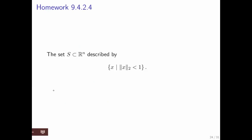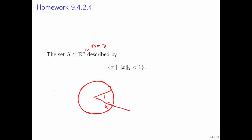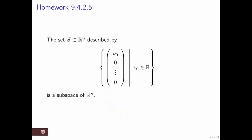What about the set of all vectors in the ball of radius 1? Restricting to n equal to 2, that's the set of all vectors inside the ball of radius 1. The problem is that if you have some vector x in that ball, then alpha times x could very easily lie outside the ball. It's easy to choose an alpha such that alpha times x is outside, and therefore this is not a subspace. You can go and do the rest of the homework exercises to gain more experience.